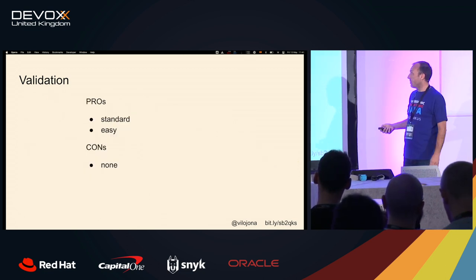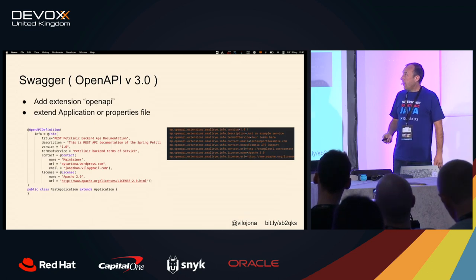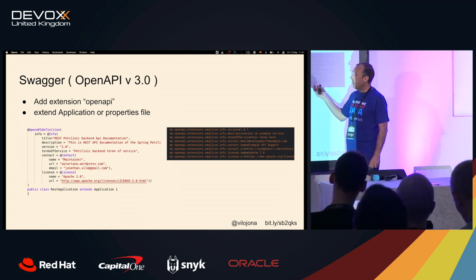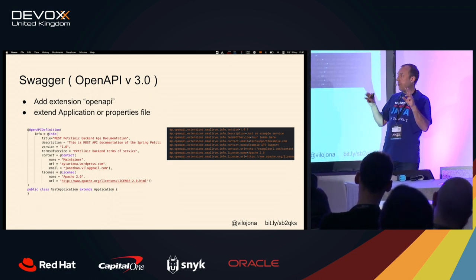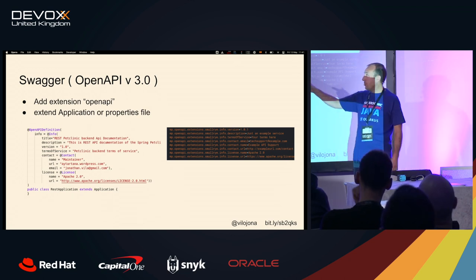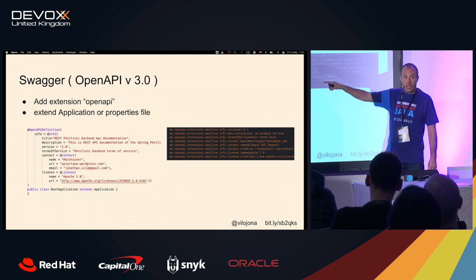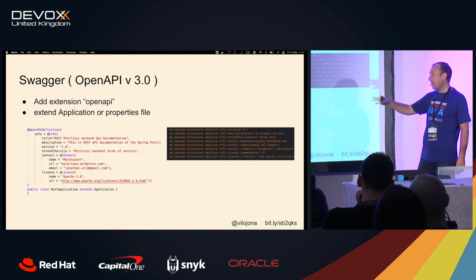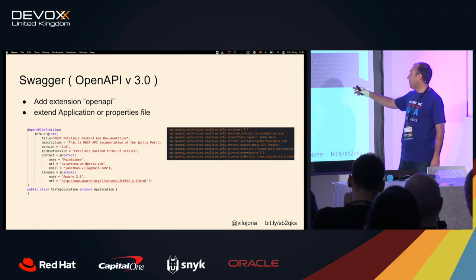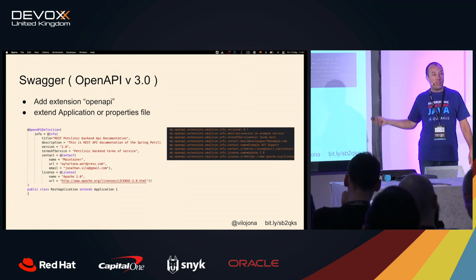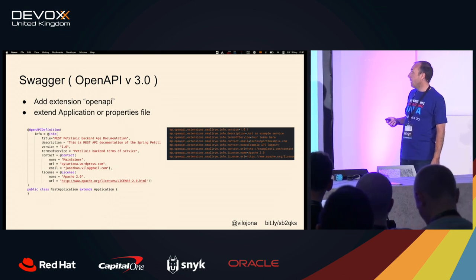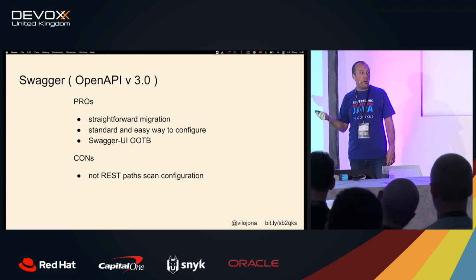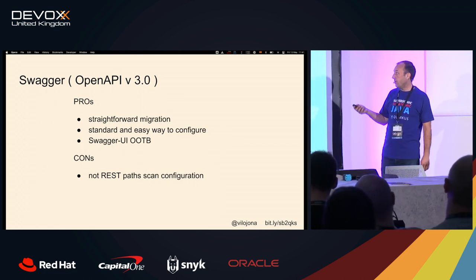Parity features: Swagger — simply add the OpenAPI extension and you will have everything. If you want to specify more information, either you use the @OpenAPIDefinition annotation in an Application class, or you use the properties file and annotate all the properties there. It has Swagger UI out of the box in test, but you can also specify that you want it in production.